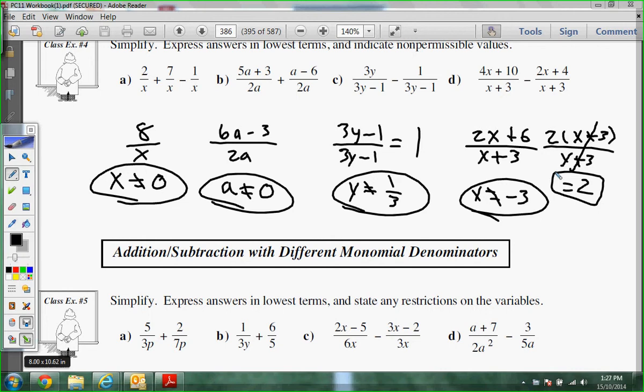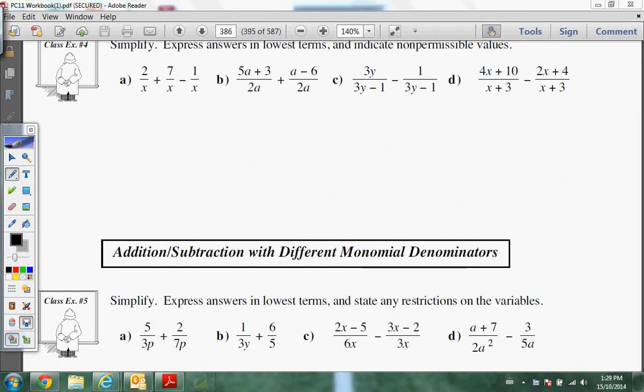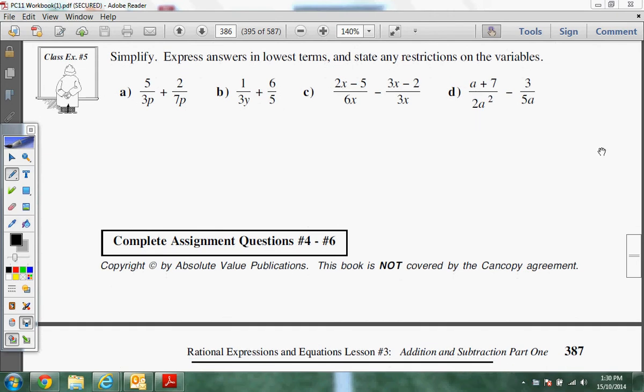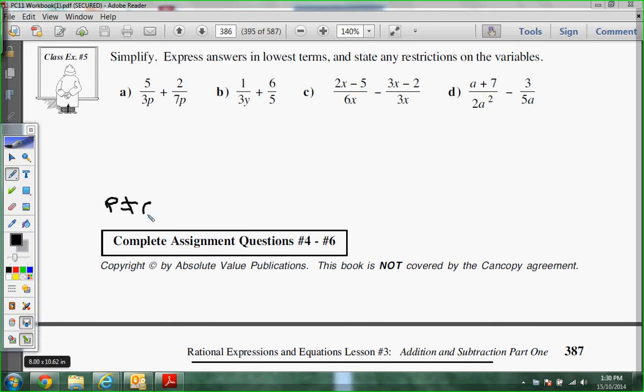All right. We're on the final couple coming here. Simplify, express the answer to the lowest terms, and state any restrictions on the variables. So your restrictions are, again, the non-permissibles. So, for example, my restrictions on these is just p can't be 0, right? Can't have p be 0. Can't have y be 0. Can't have x be 0. So, and let's see here. It's still a, so they're all the same. They're all just can't be 0s. They're all just can't be 0s.